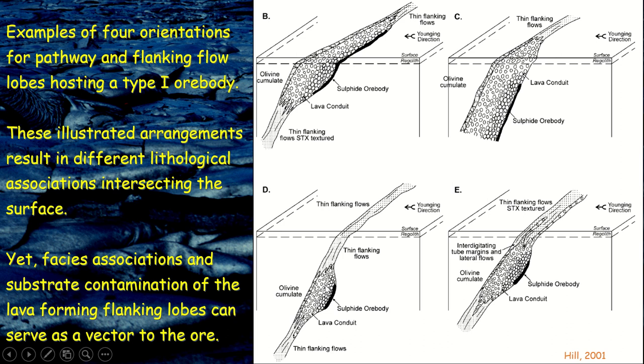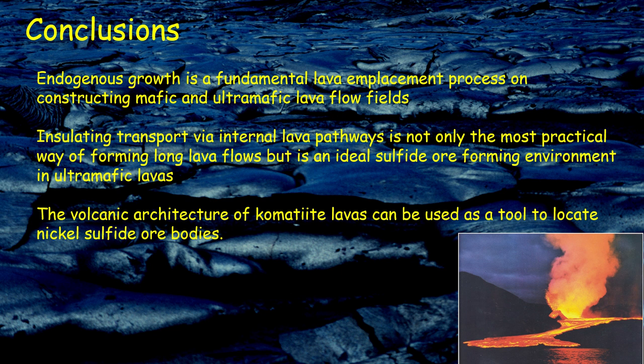Knowing that we need to look for the transport system and knowing its key features, it is easy to identify when exposed at the surface, and even easier to find the ore body. If the transport system is only partly or wholly in the subsurface, the flanking flows can be a key vector — both in terms of how they are formed and especially if they are contaminated. If you find contaminated flanking flows, you are probably very close to a pathway that might contain ore. Finally, endogenous growth is a fundamental mode of lava emplacement on Earth — all lava flows strive toward insulated transport. Insulated transport is not only the most effective way of making long lava flows, but it is also ideal for sulfide ore-forming environments because it is totally sealed off from external elements, behaving like a closed system. Volcanic architecture of komatiite lavas can therefore be used as a tool to locate and find nickel sulfide ore bodies.